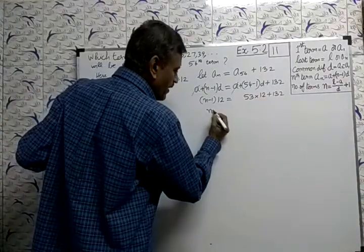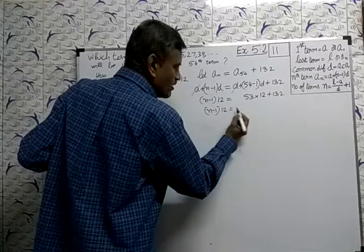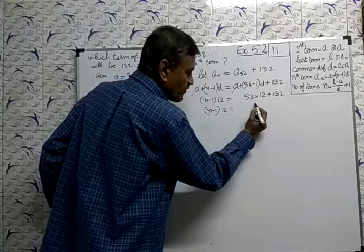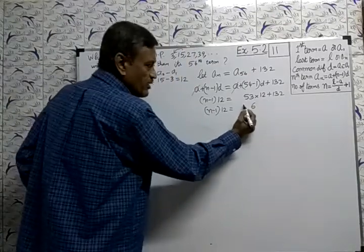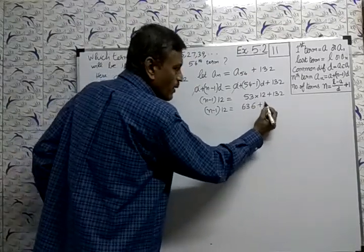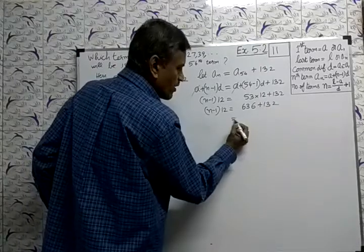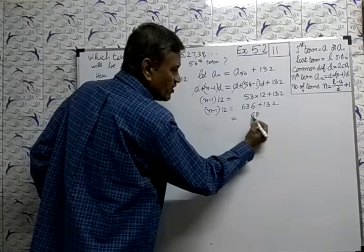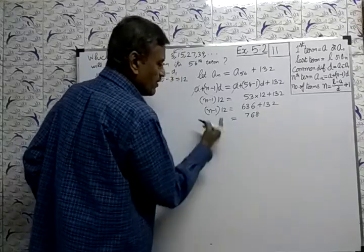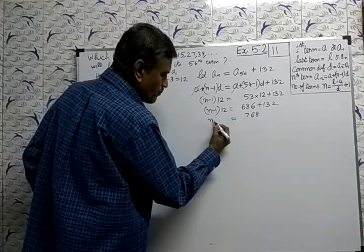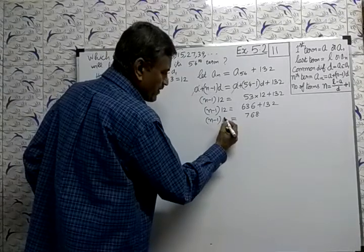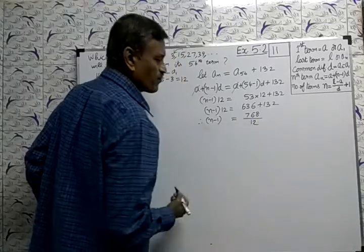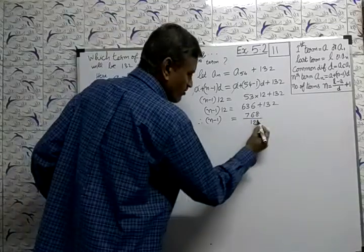N minus 1 into 12. Here I am simplifying first. 12, 3s are 3, 12, 5s are 60 plus 3, 63 plus 132. At first, 2 plus 6, 8, 3 plus 3, 6, and 7. This 12, you are going to divide that side. This 12 is going down. Divide by 12 table.